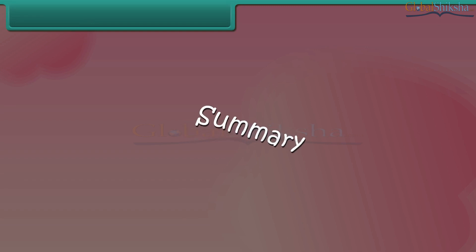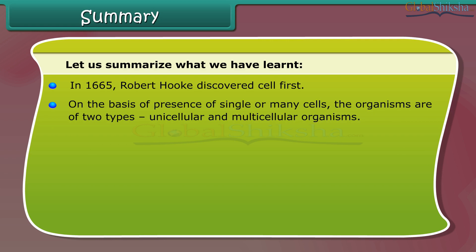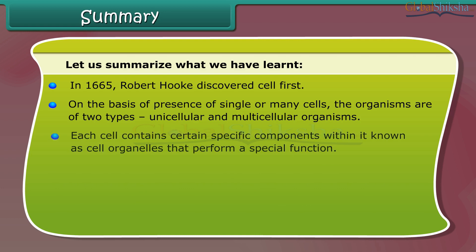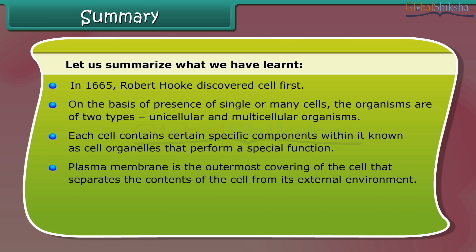Summary: In 1665, Robert Hooke discovered the cell. On the basis of the presence of single or many cells, organisms are of two types: unicellular and multicellular. Each cell contains certain specific components known as cell organelles that perform special functions. The plasma membrane is the outermost covering of the cell that separates the contents of the cell from its external environment.